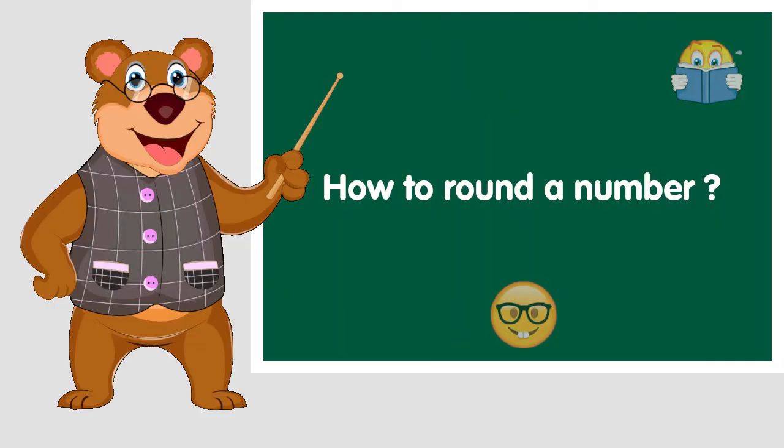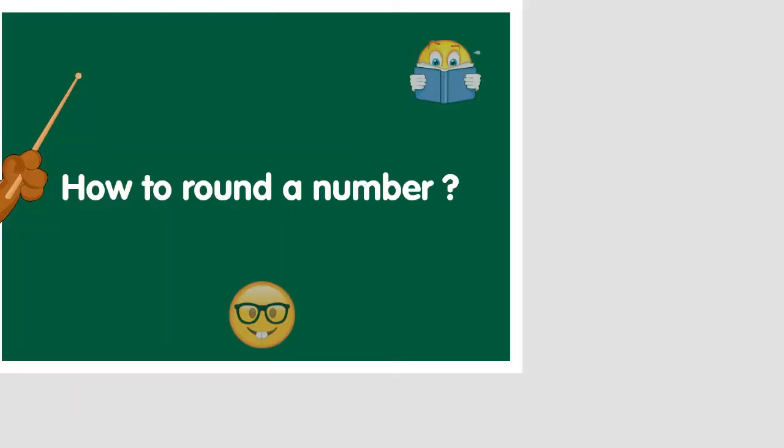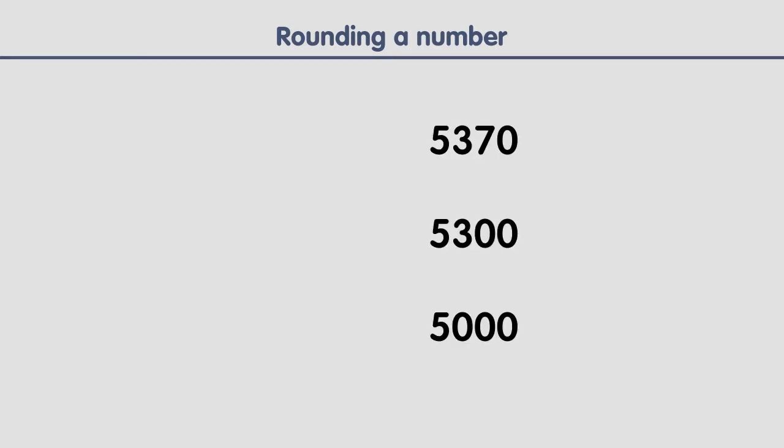Today we are going to learn how to round a number. When we round a number, we basically make a number with more zeros. For example, these numbers are rounded versions of this number. As we can see, rounding a number means replacing some digits of the number with zeros.